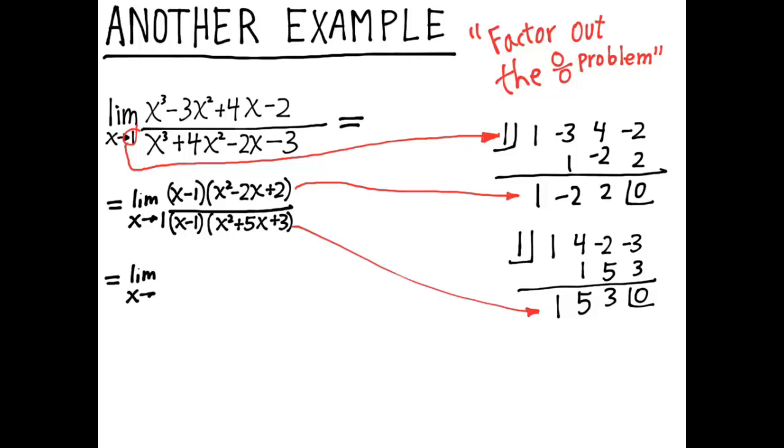Then I can cancel out the 0 over 0 problem. And then I can substitute x equals 1 and evaluate. And the answer is 1 ninth. Now when you get an answer to a big complicated limit like this, check it on your calculator. Look at a graph.